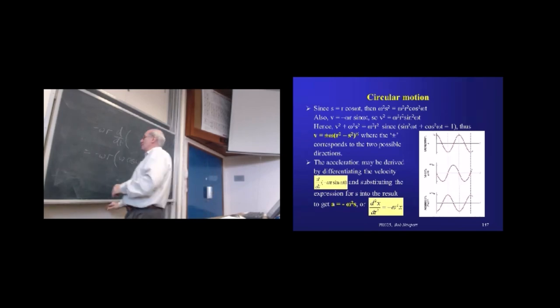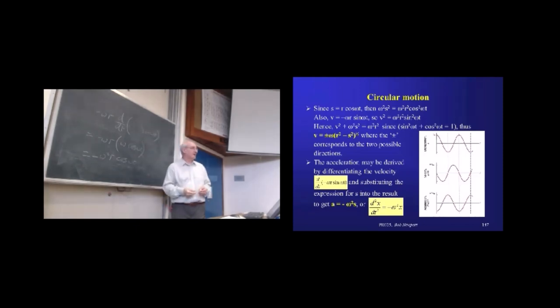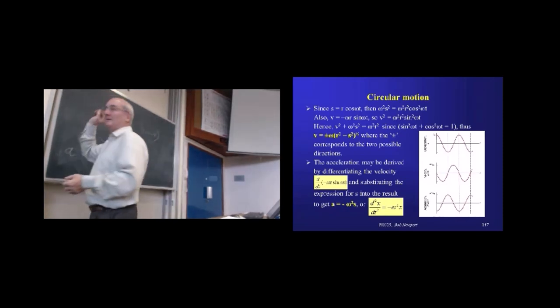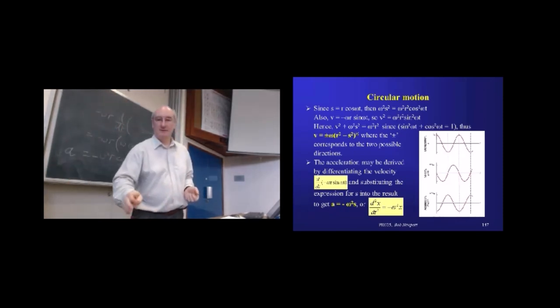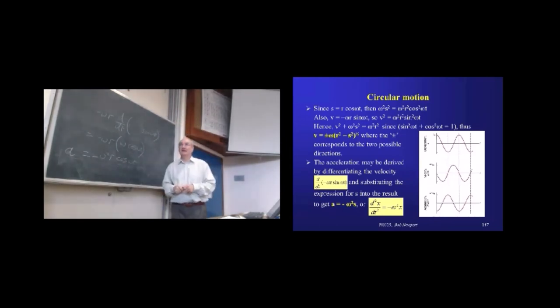All right, so, see what we've got here? We've got minus ω squared r cosine ω t. All right, that's our acceleration. That's dv by dt. Okay, but what is r cos ω t? It's just the displacement. So, we can make that substitution. We can replace r cos ω t by the displacement.